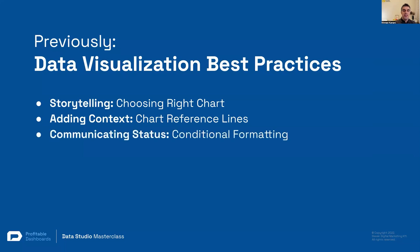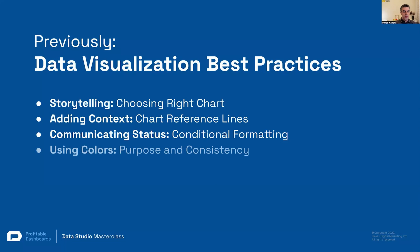We covered communicating the status of a metric or a KPI with conditional formatting — red if it was bad, green if it was good, yellow if it was a warning, something like that.